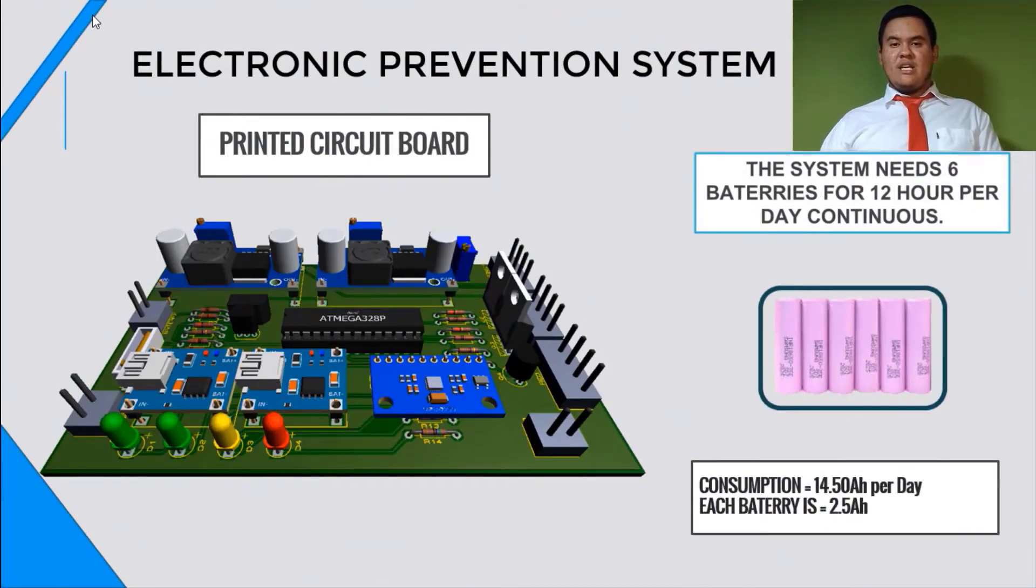This system works with batteries. We need to install six batteries when the system works. These batteries have an automatic charger. All the systems have a consumption of 44.15 A per day. So, this is the consumption of the whole system in 12 hours continuous of work.